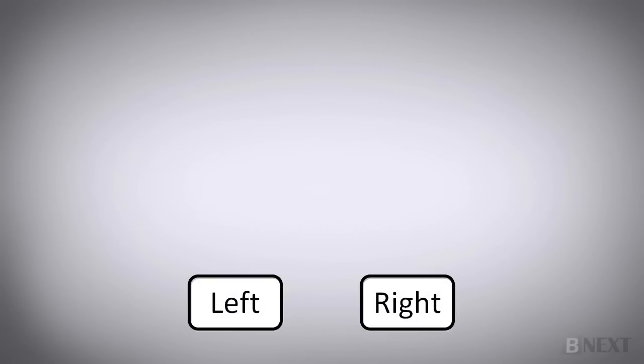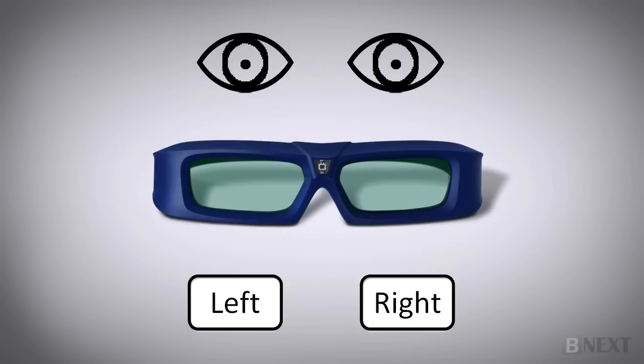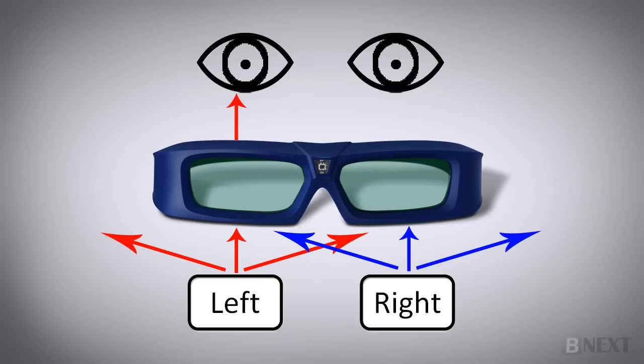In order to see the 3D effect, we need to make sure that each eye sees only the video or image that is intended for it, which is why we use 3D glasses. All the 3D glasses are equipped with special lenses that make sure this will happen. They filter only the left frame to the left eye, and the right frame to the right eye. The difference between each type of 3D glasses is in the way they do that.